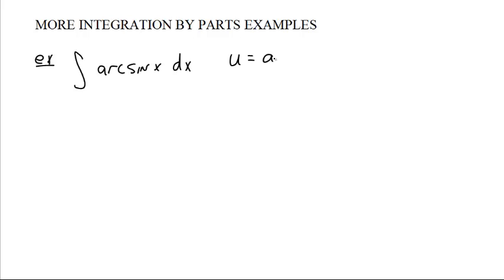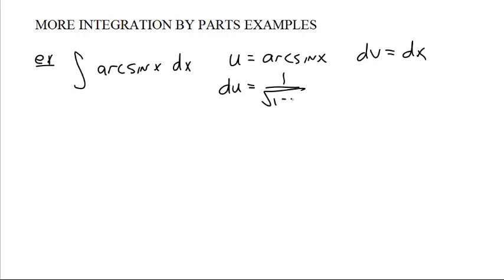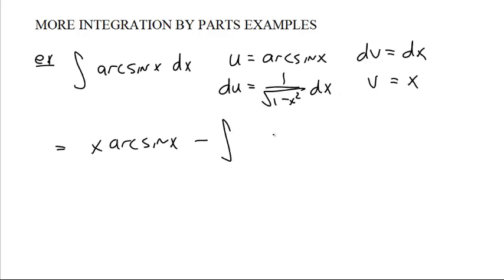So set u equal to the arcsine of x. This is remarkably similar to the logarithm example. dv is just the dx. The differential of u is 1 over the square root of 1 minus x squared, dx. You all know the derivative of arcsine, of course you do. And v is just x. So we say this is udv equals uv: x times the arcsine of x, minus the integral of v du, which is x over the square root of 1 minus x squared, dx.